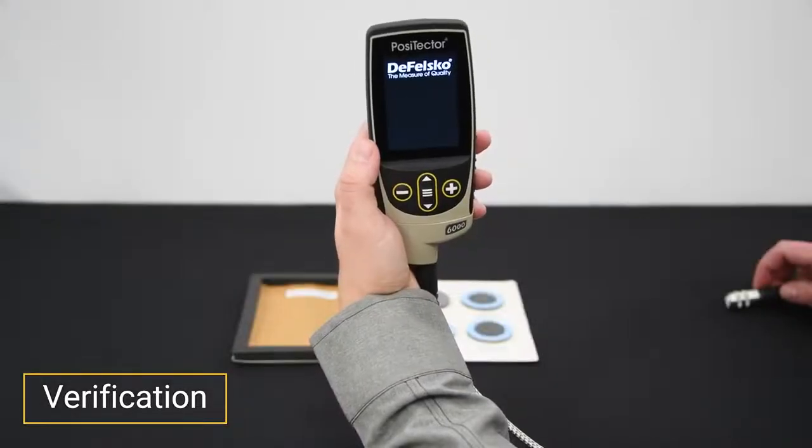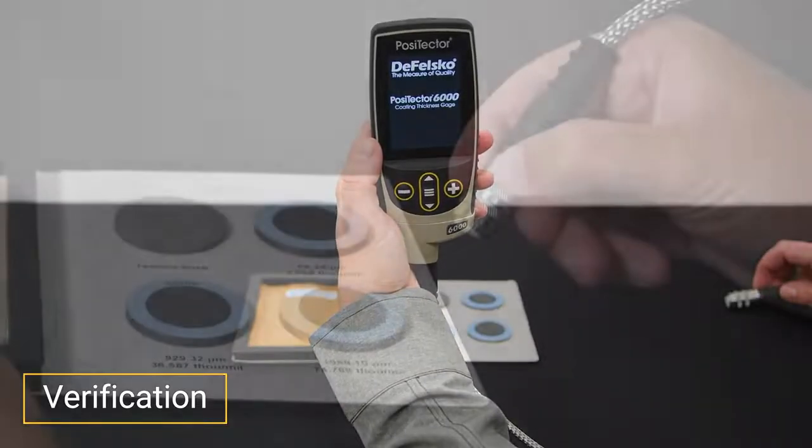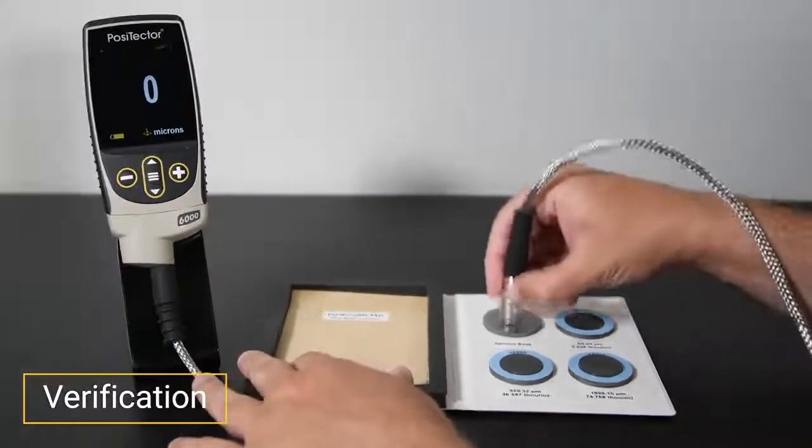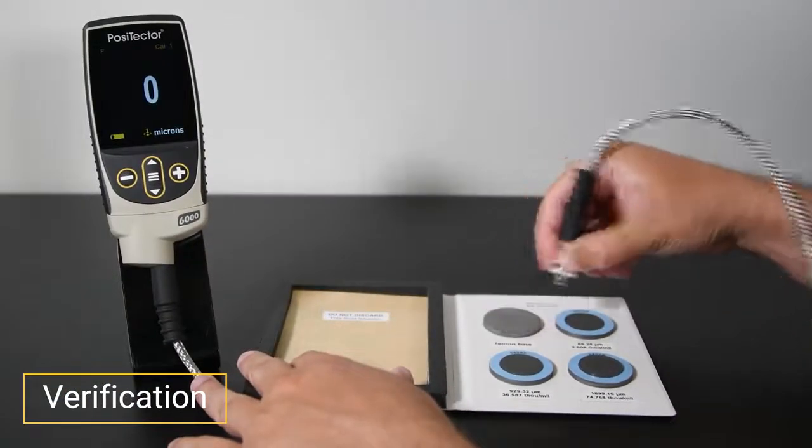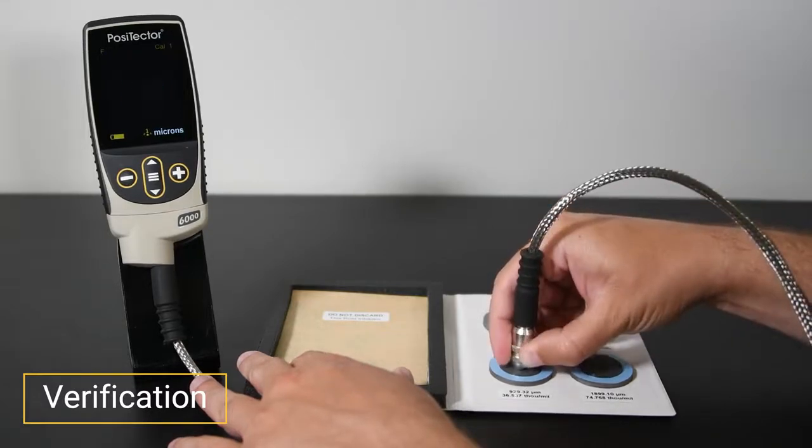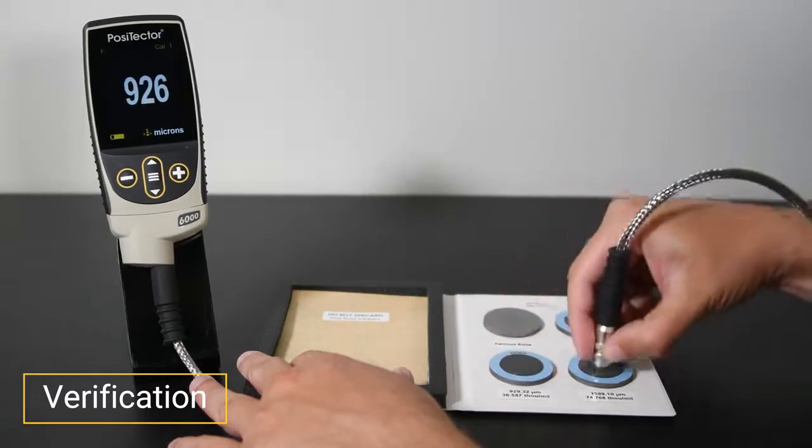Power the gauge on with the center navigation button. Hold the instrument near the probe by the outer shell or probe casing, not the cable. Simply take measurements on certified coating thickness standards and ensure that the instrument is measuring within the combined tolerance of both the standard and instrument.